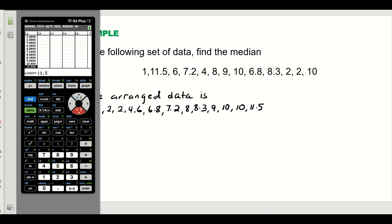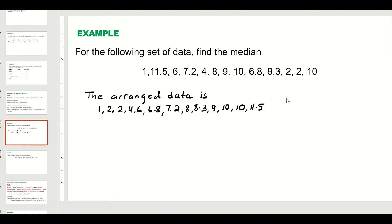We copy the arranged data. Counting the values: one, two, three, four, five, six, seven, eight, nine, ten, eleven, twelve, thirteen. So n is equal to 13, which is an odd number.